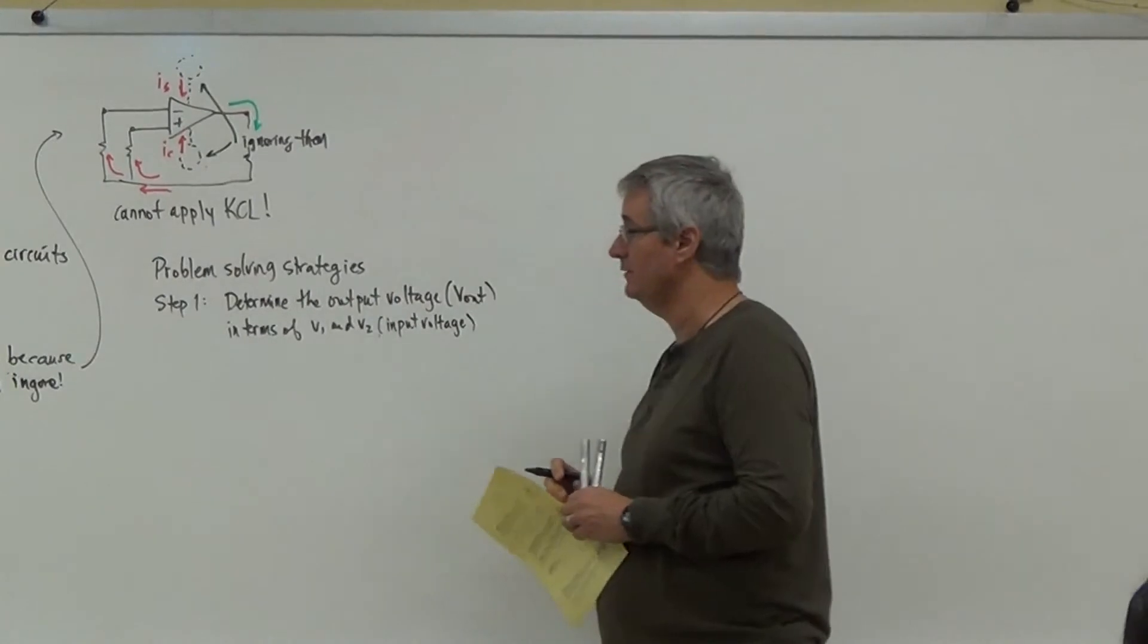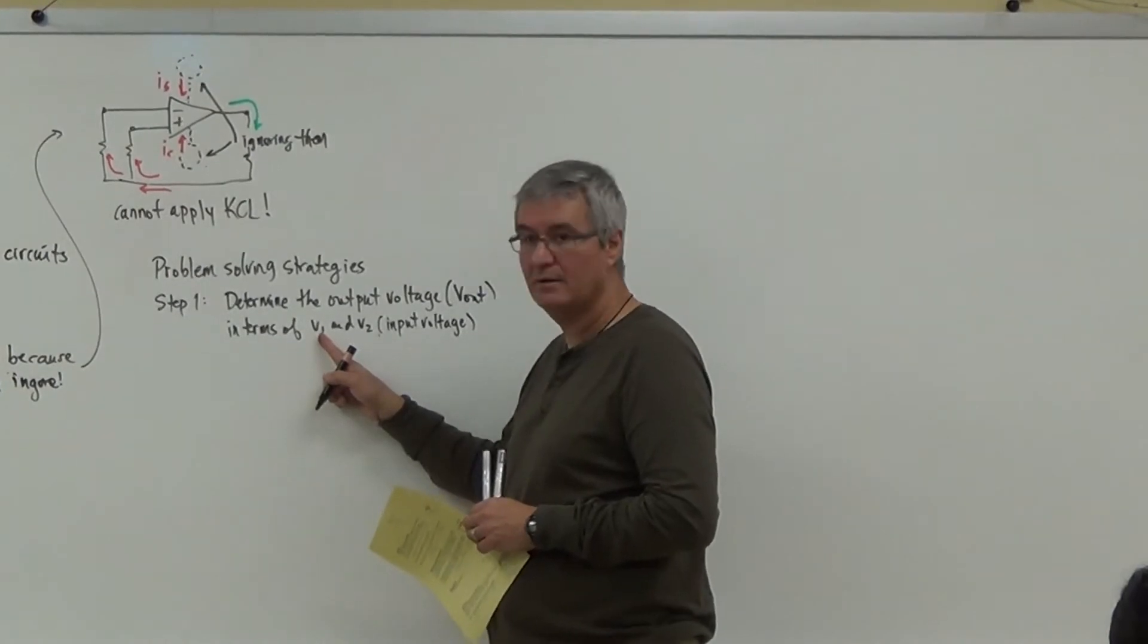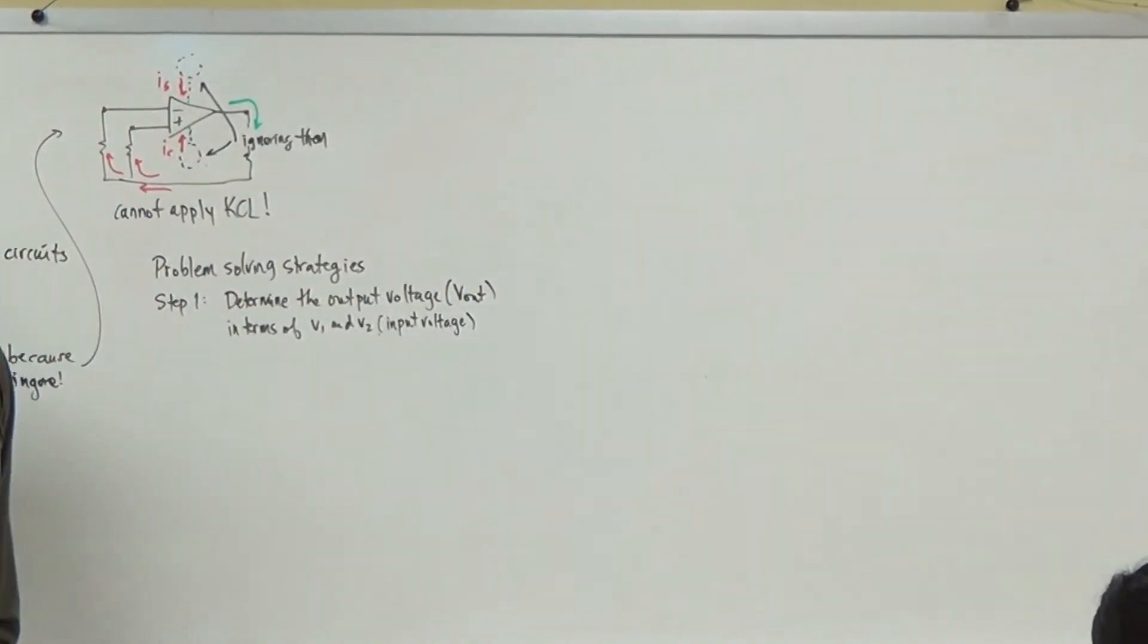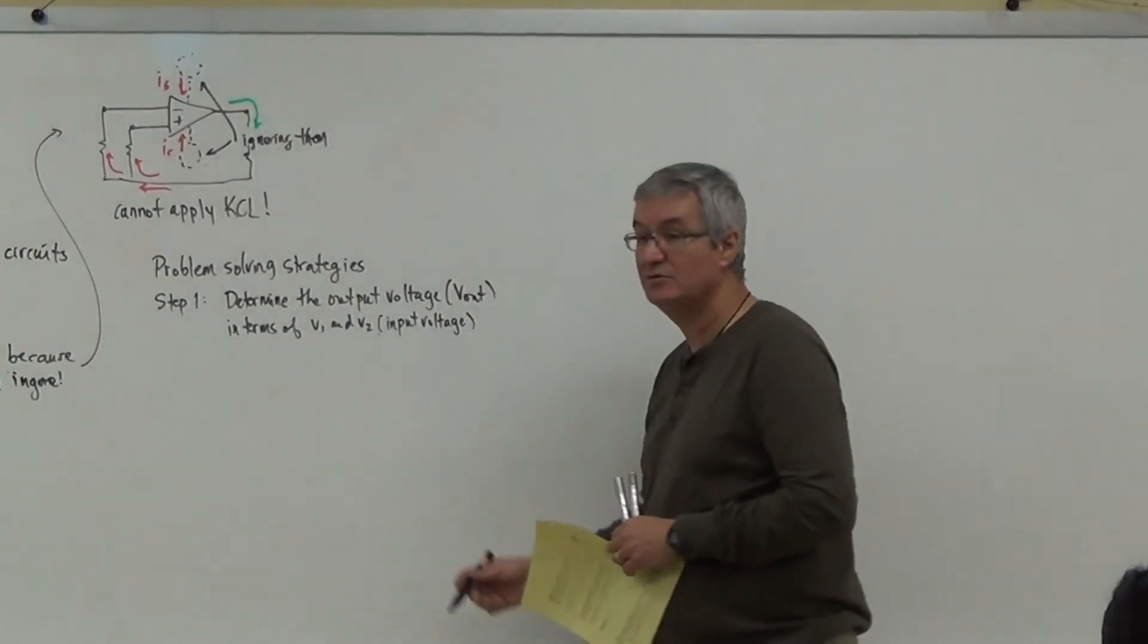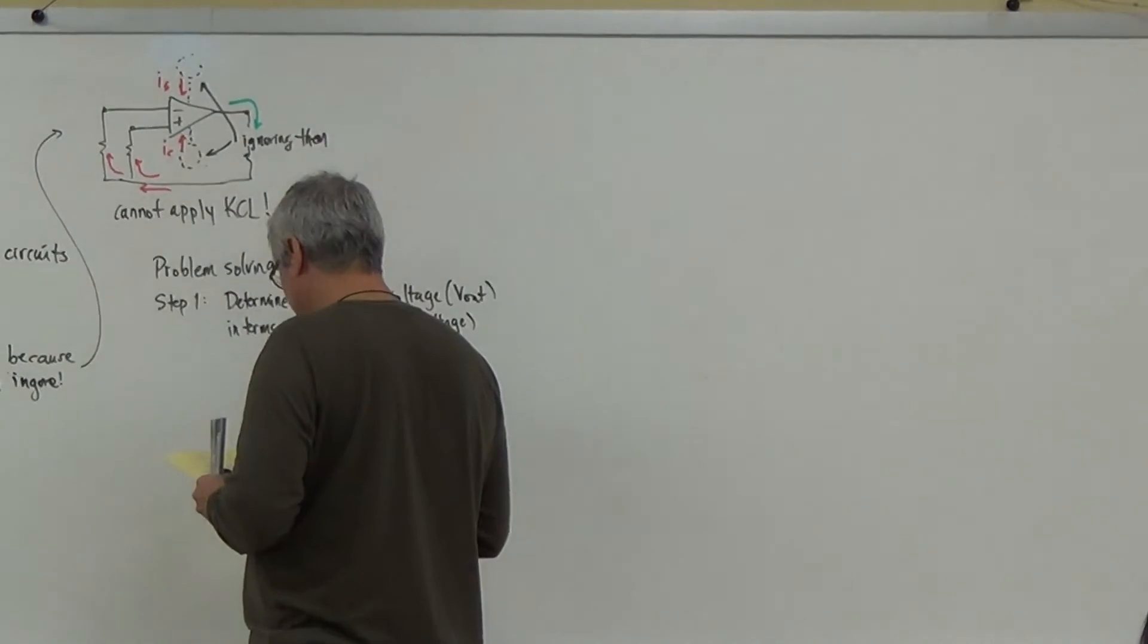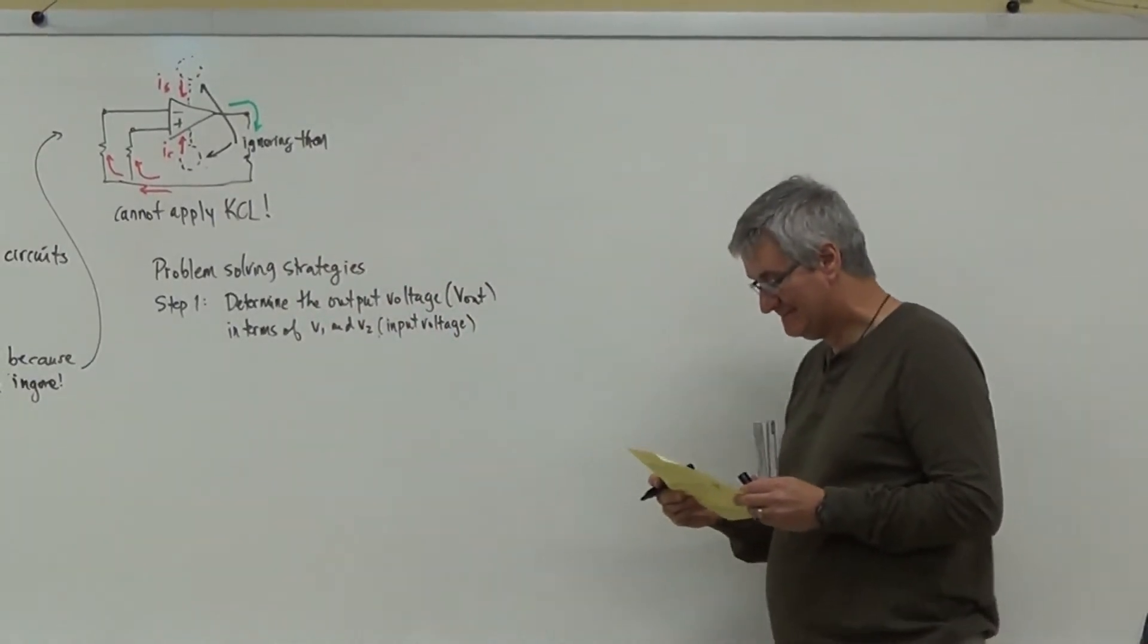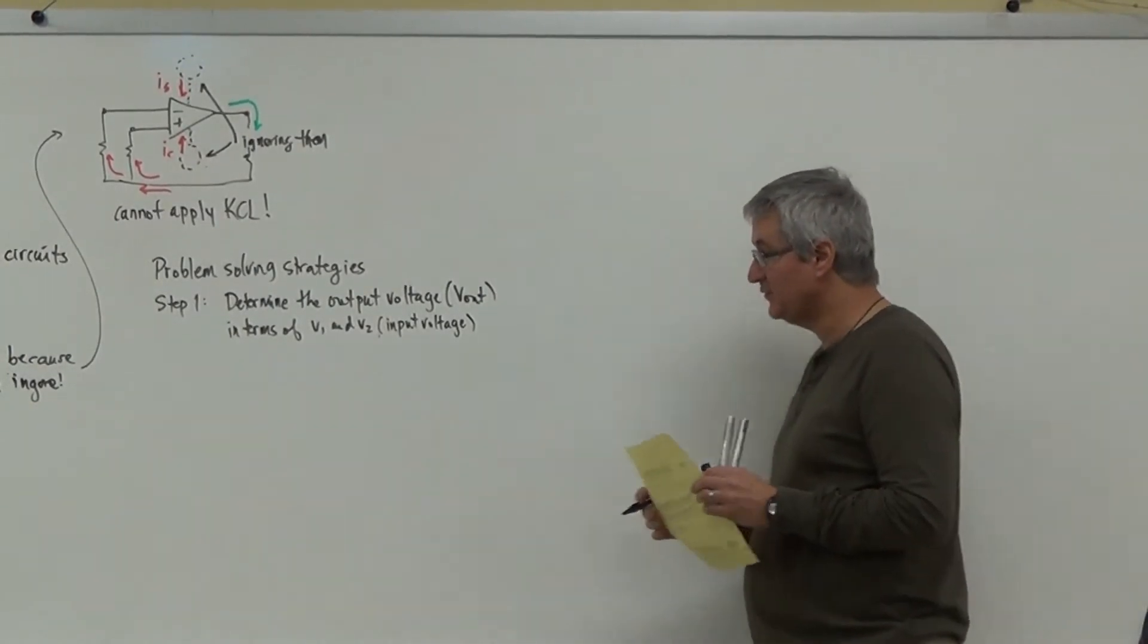Now what you're going to find here is that this V1, okay, V1 is almost always going to be connected directly to V_out. So you're really trying to write V1 in terms of V_out. But you'll see that there are situations where V2 comes into play. And then what you do here is that what you're going to find in this case here, how do I write this thing here?